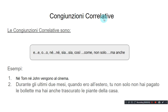Congiunzioni correlative — correlative conjunctions. Le congiunzioni correlative sono: e...e, o...o, ne...ne, sia...sia, così...come, non solo...ma anche.